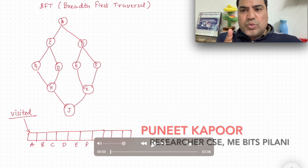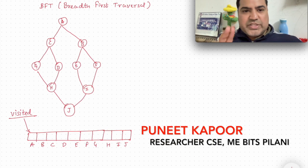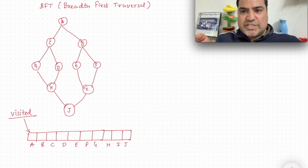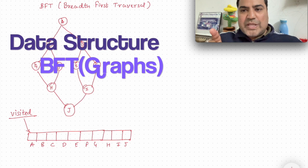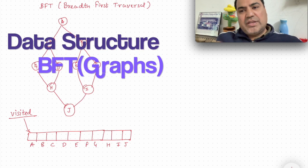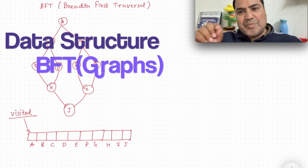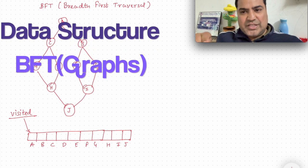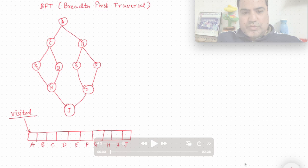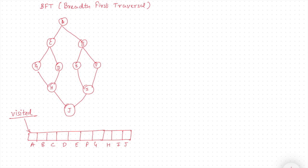Today we'll see how to do breadth first traversal in graphs. We'll also see time complexity with adjacency matrix and adjacency list.